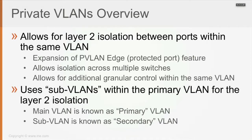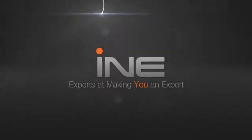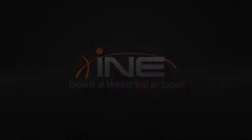For Private VLANs to function and offer the ability to span across switches and provide better control within the VLAN, they make use of the concept of sub-VLANs and main VLANs. The main VLAN is also known as the primary VLAN, while the sub-VLANs are known as the secondary VLANs. When you define the configuration, you have to specify what your primary VLANs are and what your secondary VLANs will be.